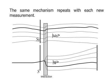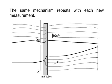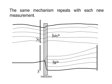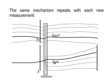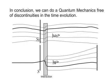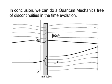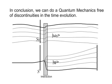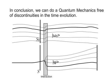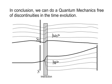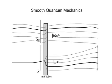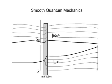The same mechanism repeats with each new measurement. In conclusion, we can do quantum mechanics free of discontinuities in the time evolution: smooth quantum mechanics.